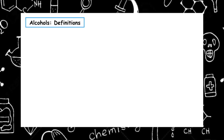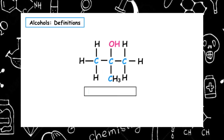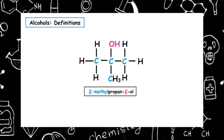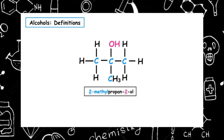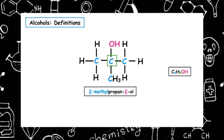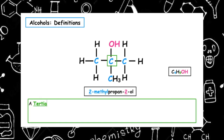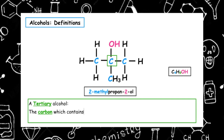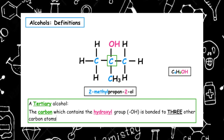The next isomer of butan-1-ol is known as 2-methylpropan-2-ol. It still has the same molecular formula C4H9OH. This is classified as a tertiary alcohol — the carbon which contains the hydroxyl group is bonded to three other carbon atoms.